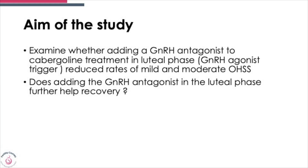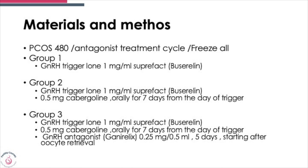The aim of the study was to see whether adding a GnRH antagonist to cabergoline in the luteal phase, after having given an agonist trigger, reduced the rate of mild or moderate ovarian hyperstimulation and whether it helps recovery. The study included 480 PCOS women using an agonist trigger in an antagonist treatment cycle. Group one received the GnRH agonist trigger plus cabergoline 0.5 mg from the day of trigger for seven days. Group two received the agonist trigger with cabergoline 0.5 mg orally for seven days from the day of trigger, plus the addition of a GnRH antagonist 0.25 mg for five days after oocyte retrieval.